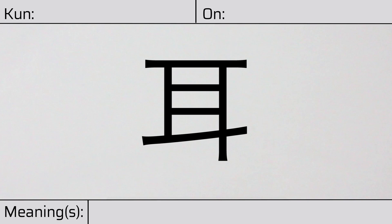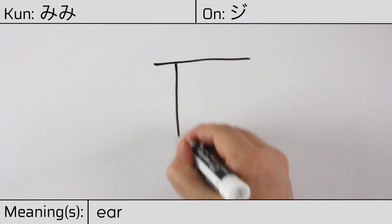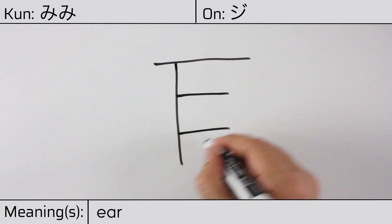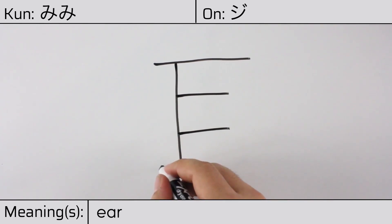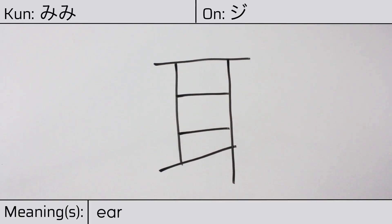Welcome to this lesson on Japanese kanji. Today, we'll be discussing this character. This kanji has a kunyomi or Japanese reading of mimi, and it has an onyomi or Chinese reading of ji. This character has the meaning ear. Here is the stroke order. This character has no radicals, but is itself a radical in other kanji.